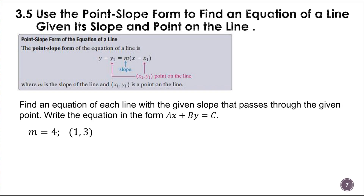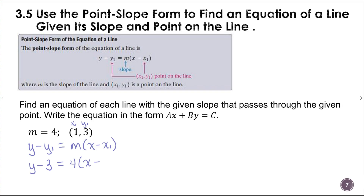To begin, I'm going to write out the formula and then substitute in for each variable — the slope and the ordered pair. That means we're going to put something in for y sub 1, m, and x sub 1. This is my x sub 1 and my y sub 1, so that's going to be y minus 3. The 3 goes in for y sub 1, 4 goes in for the slope, and 1 goes in for x sub 1.